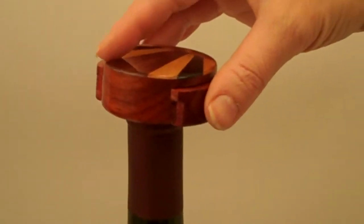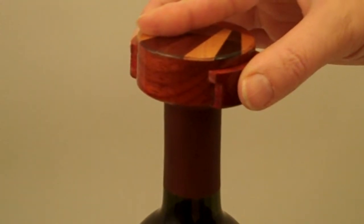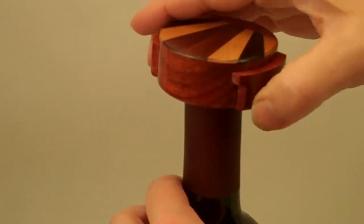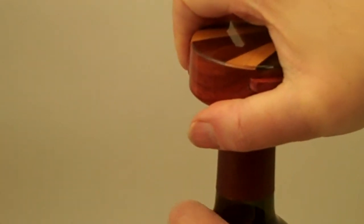Now allow me to demonstrate. You place the foil cutter directly on top of the wine bottle firmly, squeeze and turn the bottle.